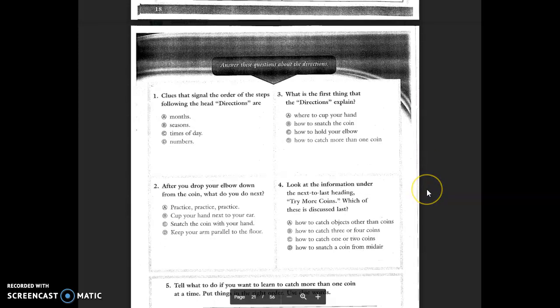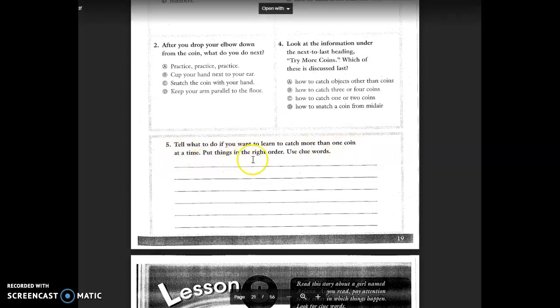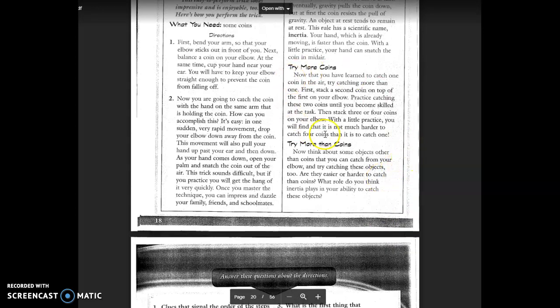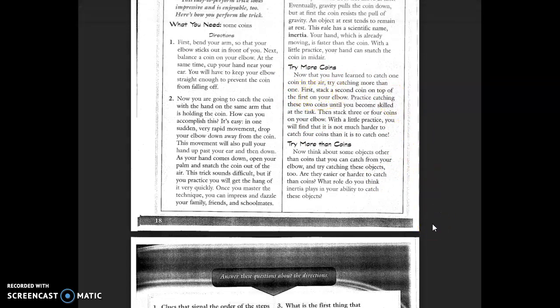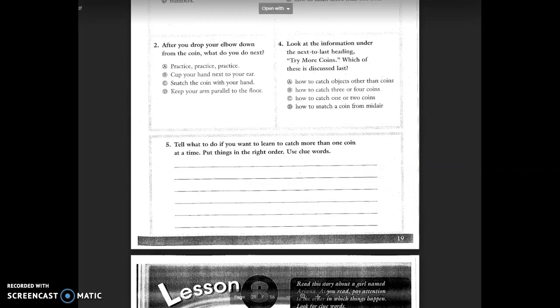Remember, you can always pause the video or come back to it later. Question five. This is your short answer. You gotta restate, answer, and prove from the text. Tell what to do if you want to learn to catch more than one coin at a time. Put things in the right order and use clue words. So, you would go back in your text and figure out where it's talking about more than one coin. Use clue words as you write it to put them in the right order. You can use words like first, next, and last, or one, two, and three.